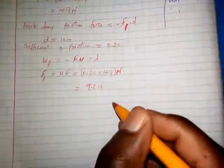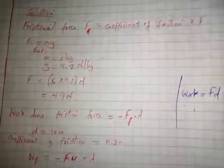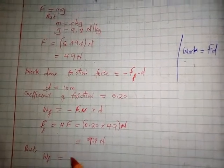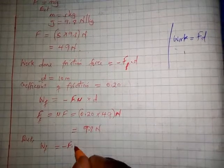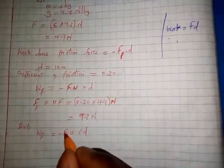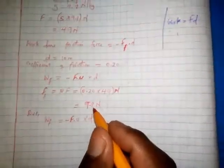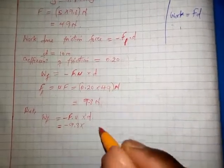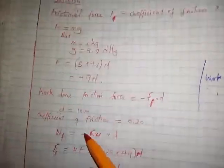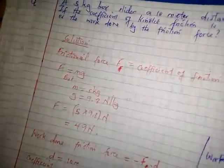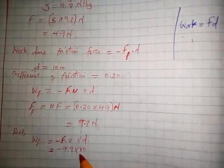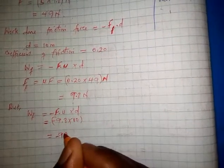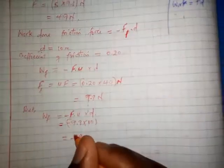Work done by friction force W_f is given by negative F times mu times d. F times mu equals 9.8 Newtons, so we multiply by negative 1 to get negative 9.8, then multiply by the distance d of 10 meters. The answer becomes negative 98 Joules — the SI unit for work is Joules.